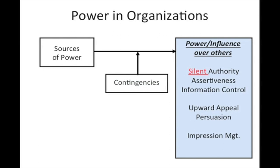Next is information control — manipulating others' access to information by withholding, filtering, or rearranging it. Think about a top secret project where information is shared only on a need-to-know basis. Since everyone wants to remain part of that team, they tend not to share their information with each other. If one person gives what they know to another team member, they lose all value to the team.